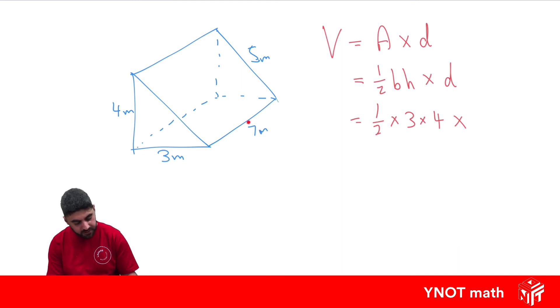Then we'll do a half times 12, which is 6. And finally, 6 times 7 is 42 meters cubed for the volume.